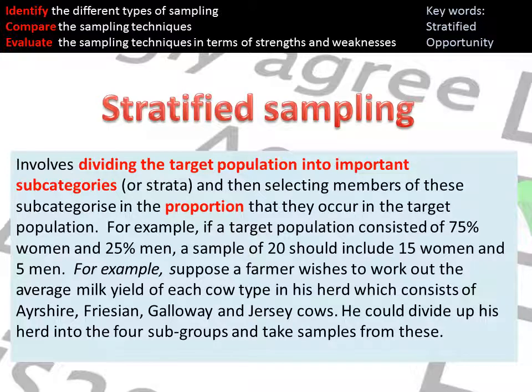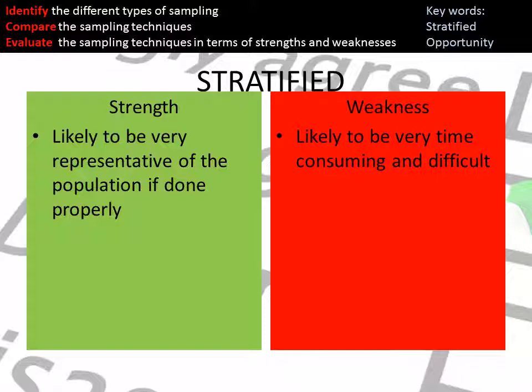Stratified sampling involves dividing the target population into important subcategories and selecting participants based on those subcategories, ensuring they remain in proportion with the target population. For example, if the target population is 75% women and 25% men, your sample should reflect the same ratio — so in a sample of 20, 15 should be women and 5 should be men. Stratified sampling is very good because it is representative, allowing generalization, but it can be very time-consuming and difficult to carry out.